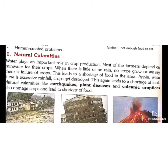Natural calamities include earthquakes, floods, droughts, plant diseases, and volcanic eruptions. They can damage crops and lead to shortage of food. Water plays an important role in crop production. In India, most farmers depend on rain water only. When there is little or no rain, no crops grow, leading to failure of crops and shortage of food.